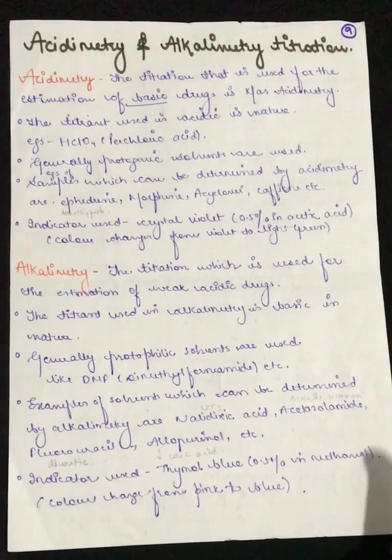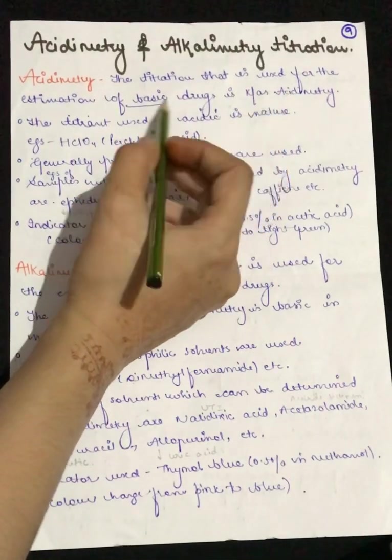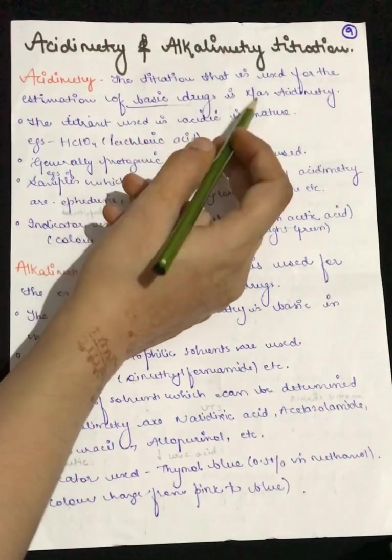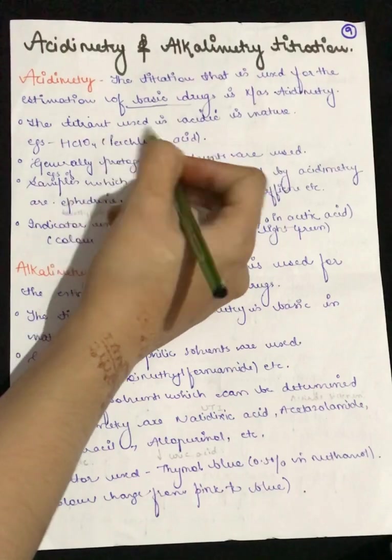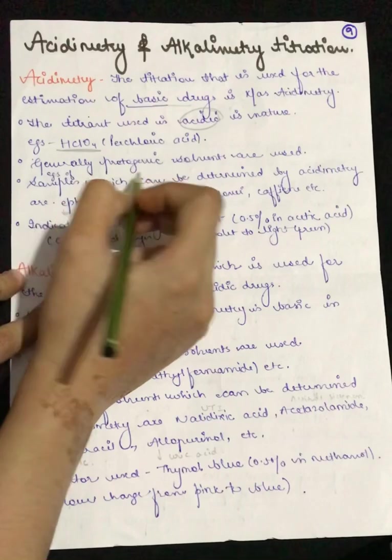Also, let's study about acidimetry and alkalimetry titration. Acidimetry is the titration used for the estimation of basic drugs and the titrant used is acidic in nature. For example, perchloric acid. Generally, we will use protogenic solvents.